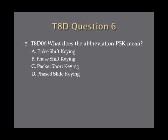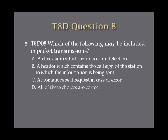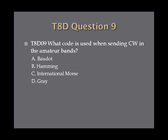Question 6: What does the abbreviation PSK mean? A. Pulse Shift Keying. B. Phase Shift Keying. C. Packet Short Keying. Or D. Phased Slide Keying. Question 7: What is PSK31? A. A High-Rate Data Transmission Mode. B. A Method of Reducing Noise Interference to FM Signals. C. A Method of Compressing Digital Television Signal. Or D. A Low-Rate Data Transmission Mode. Question 8: Which of the following may be included in packet transmissions? A. A Checksum which permits error detection. B. A Header which contains the callsign of the station to which the information is being sent. C. Automatic Repeat Request in Case of Error. Or D. All these choices are correct. Question 9: Which code is used when sending CW in the amateur bands? A. Baudot. B. Hamming. C. International Morse. Or D. Gray.